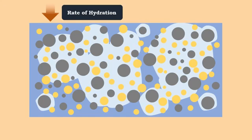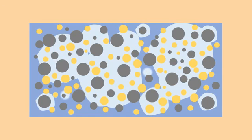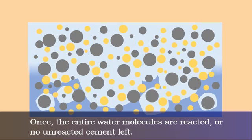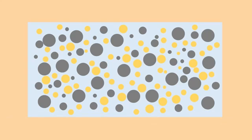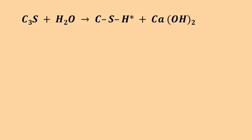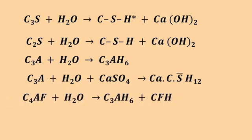The hydration products gradually fill the space originally occupied by water. Once the entire water molecules are reacted or no unreacted cement is left, the hydration of cement stops. Let us now look at the chemical reactions involved in cement hydration.